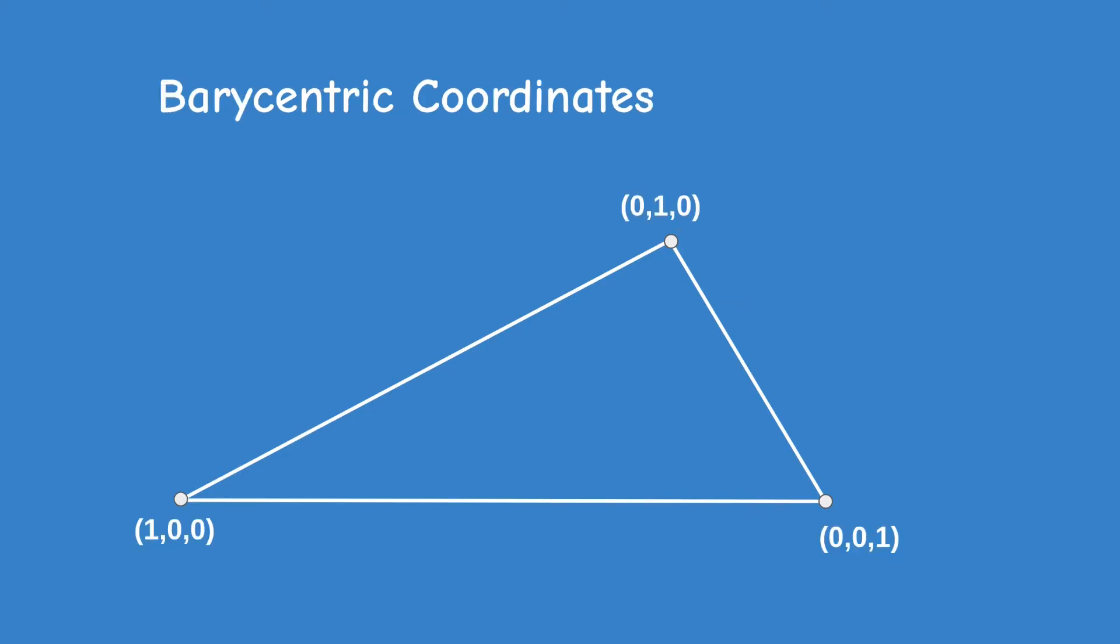The solution is to use barycentric coordinates. Barycentric coordinates are triplets of positive numbers whose sum is always 1. In the barycentric coordinates of the three vertices, we can see that one component is always 1 while the other two are 0, so that sum of 1 rule holds.